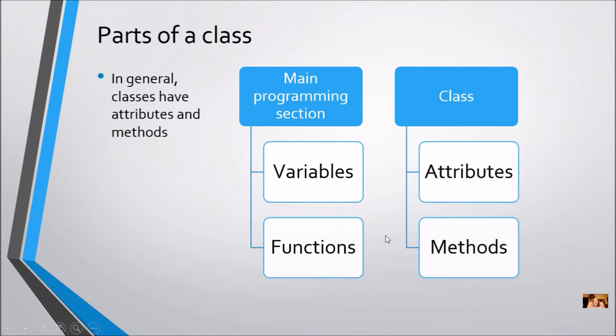You'll see the similarities, but remember that variables and functions happen in the programming section, while attributes and methods happen in a class. I'm not going to have a method in the programming section, and not a function in the class. They look the same, but when it's in a class it's a method, and when it's in the programming section it's a function.